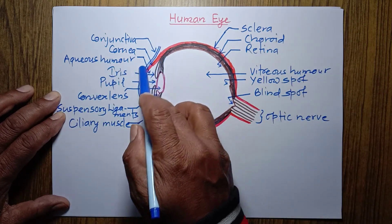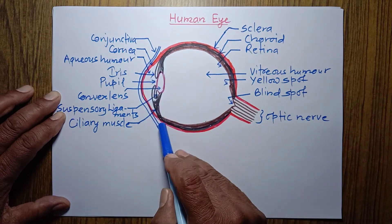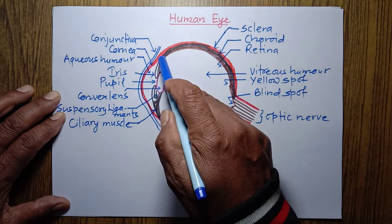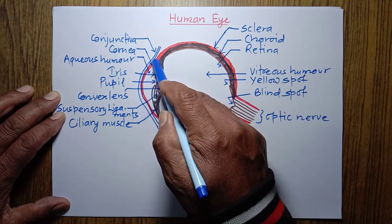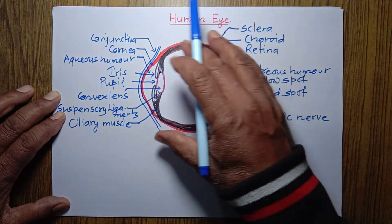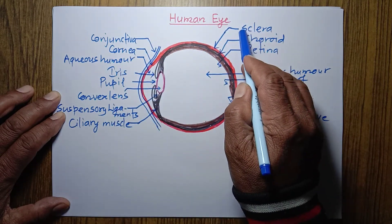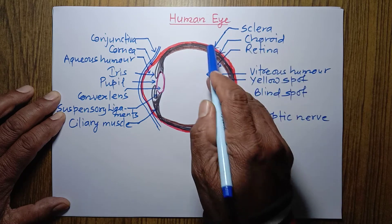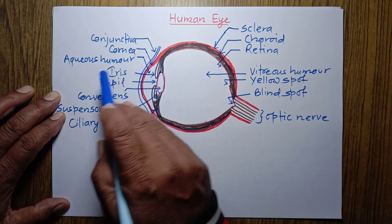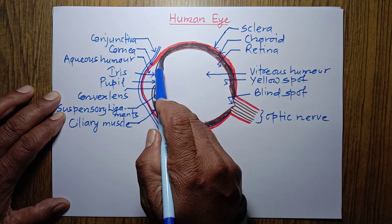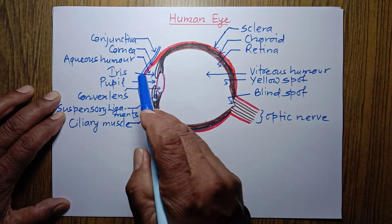Conjunctiva is a thin, transparent membrane which covers the transparent cornea. Cornea — the bulged part of the front side of our eye, that is formed by the sclera, is called cornea, and light starts to converge from the cornea, or it may start to bend from the cornea.